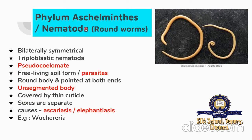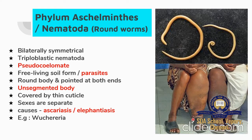Next is Phylum Aschelminthes, also known as Nematoda, which are roundworms. They are bilaterally symmetrical — divisible into two equal halves — and triploblastic with three layers. They are pseudocoelomate, free-living soil forms or parasites, with a round body pointed at both ends. The body is unsegmented and covered by a thin cuticle. Sexes are separate. This phylum can cause diseases such as ascariasis or elephantiasis. An example is Wuchereria.